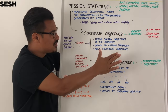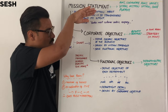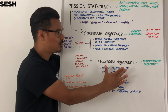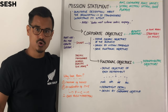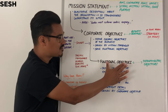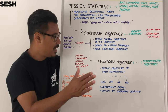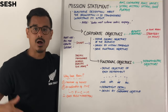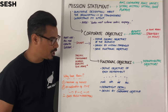Corporate objectives will be driven by the mission statement, but they will in turn drive the functional objectives — the functional objectives are plugged in to what the corporate objectives are. The functional objectives are on a department level, which is why they might be interchangeably called departmental objectives. They define the objectives of each department, such as marketing, operations, finance, and HR.